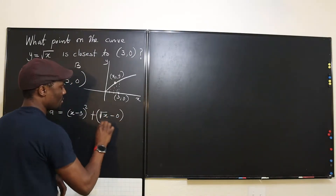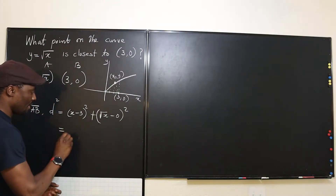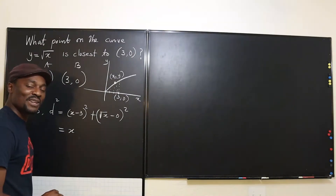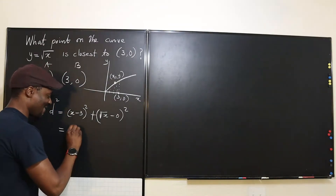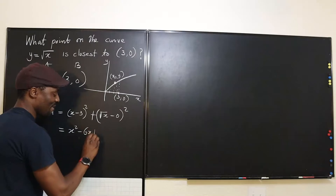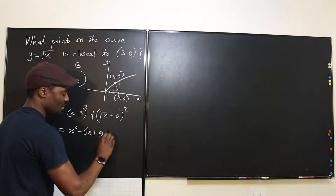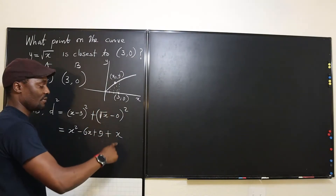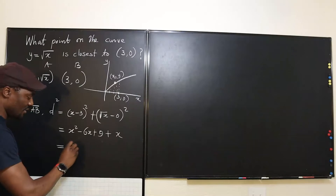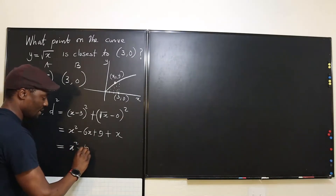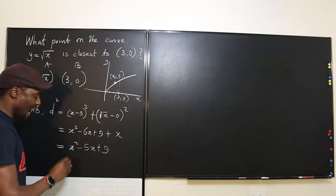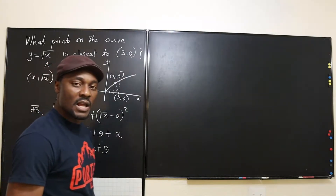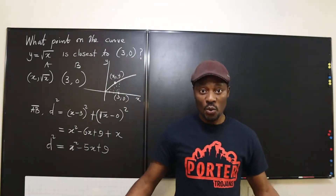So d² = (x − 3)² + (√x − 0)². Expanding: (x − 3)² = x² − 6x + 9, and (√x)² = x. So d² simplifies to x² − 5x + 9.